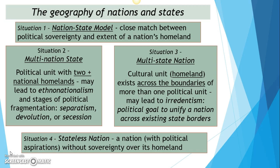Situation three is the multi-state nation — a cultural unit, a homeland that exists across the boundaries of more than one political unit. This might lead to irredentism, which is the political goal to unify a nation across existing state borders. I'll give examples of all of these after finishing the definitions.